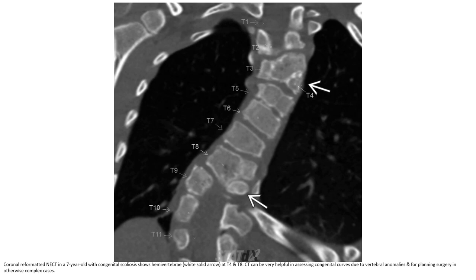This is a non-contrast CT in a seven-year-old with congenital scoliosis showing vertebral anomaly at T4 and T8. CT can be very helpful in assessing congenital curves due to vertebral anomaly and for planning surgery in otherwise complex cases.